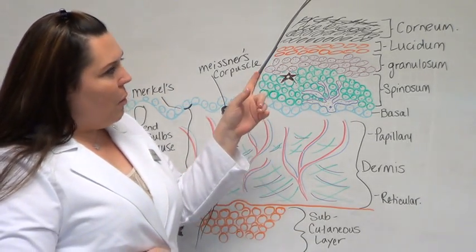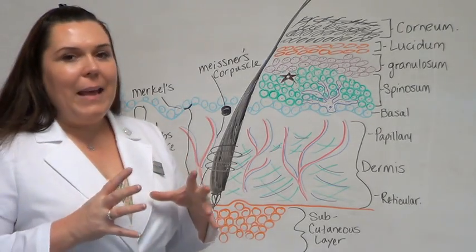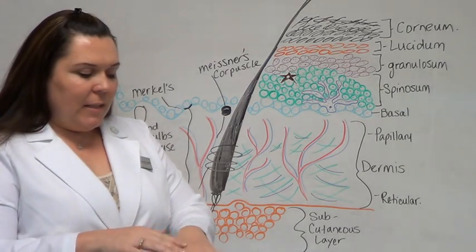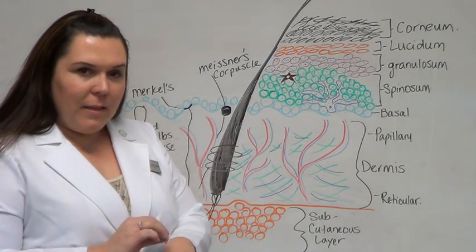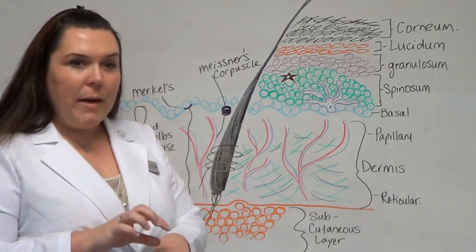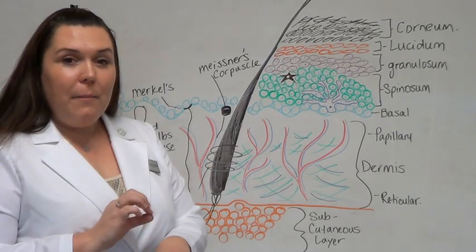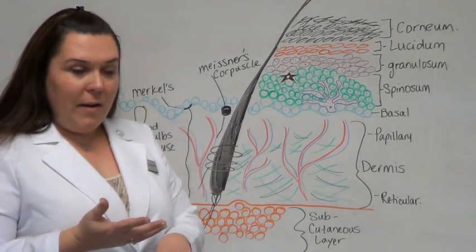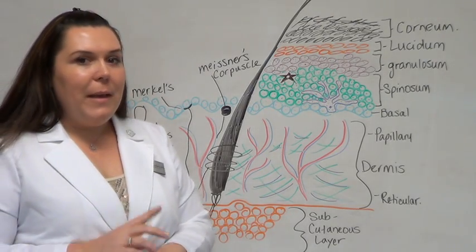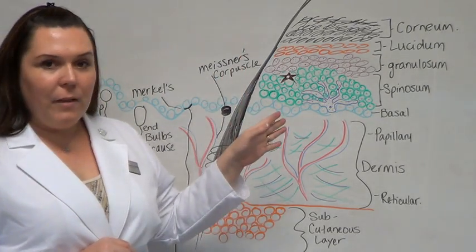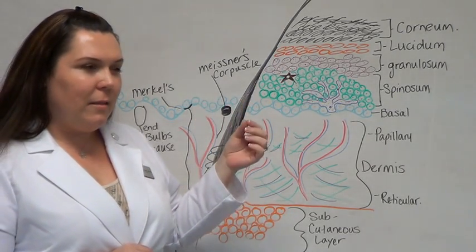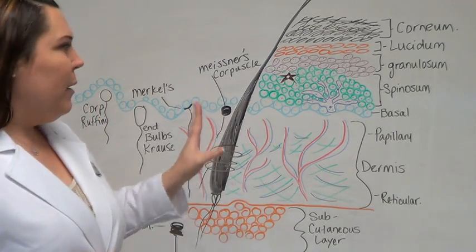On top of the corneum is what we call the acid mantle. The acid mantle is made up of sebum and sweat, and what it does is it forms this protective barrier over the skin, an additional layer of liquid, and it keeps our skin moist, soft, dewy, and it protects us from outside environment, especially bacteria. They're actually considering trying to make that an extra layer of the skin. So instead of having five layers of the epidermis, they want to make it six.